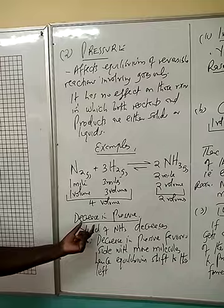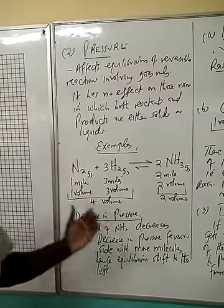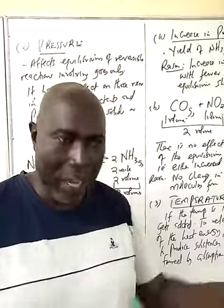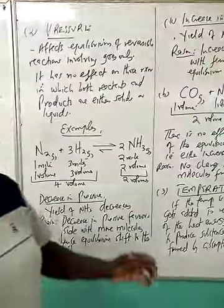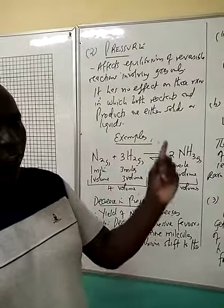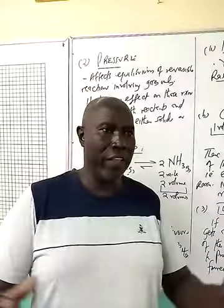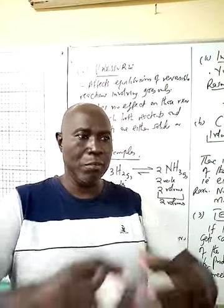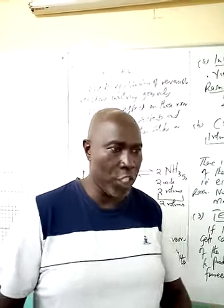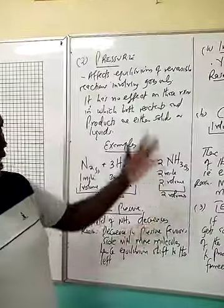Pressure is brought about by collision between gas molecules among themselves, and the collision between the gas molecules and the walls of the container. That is what brings about pressure. If the collision between the walls of the container is more, you have got more collisions and pressure is more. If you have got few collisions between the gas molecules and the walls of the container, the pressure is low.